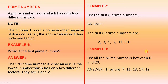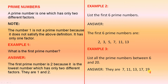Example 3: List all the prime numbers between six and twenty. Here they are — there are five of them. So those are the prime numbers between six and twenty.